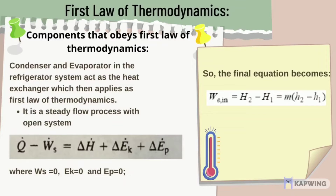In this equation, work shaft equals zero, and both potential and kinetic energy also equal zero. H represents the change in enthalpy, and Q is the heat.